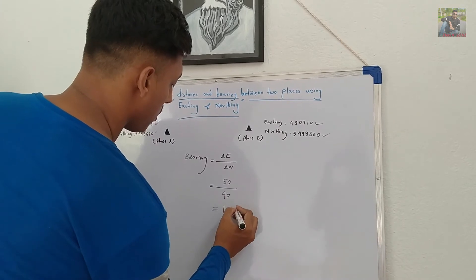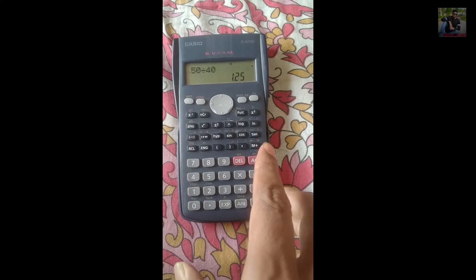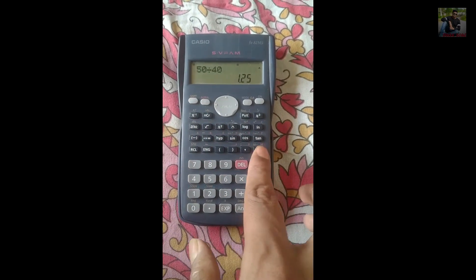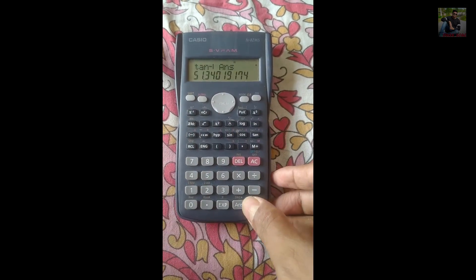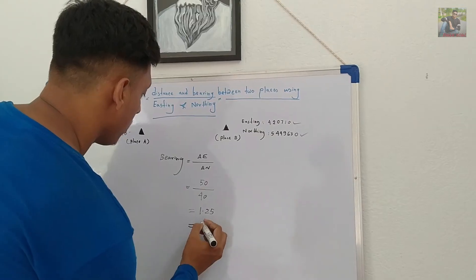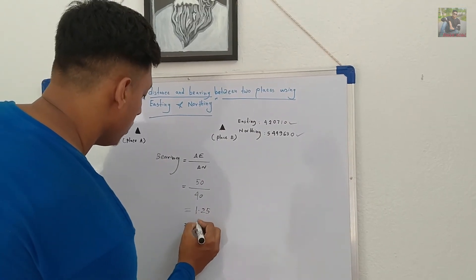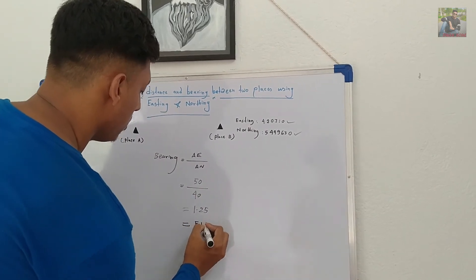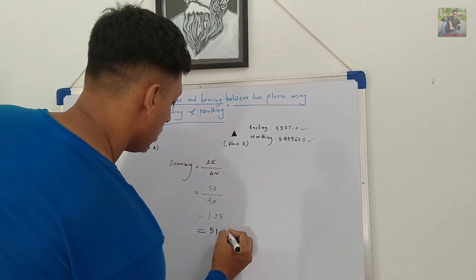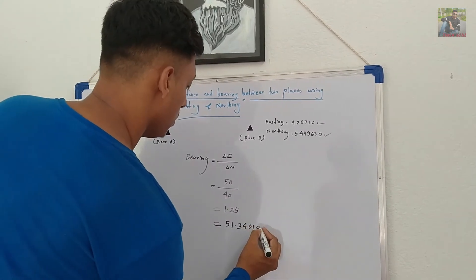Now, type tan inverse from the calculator. And the value will be converted into 51.3401975. This is the bearing between place A and place B.